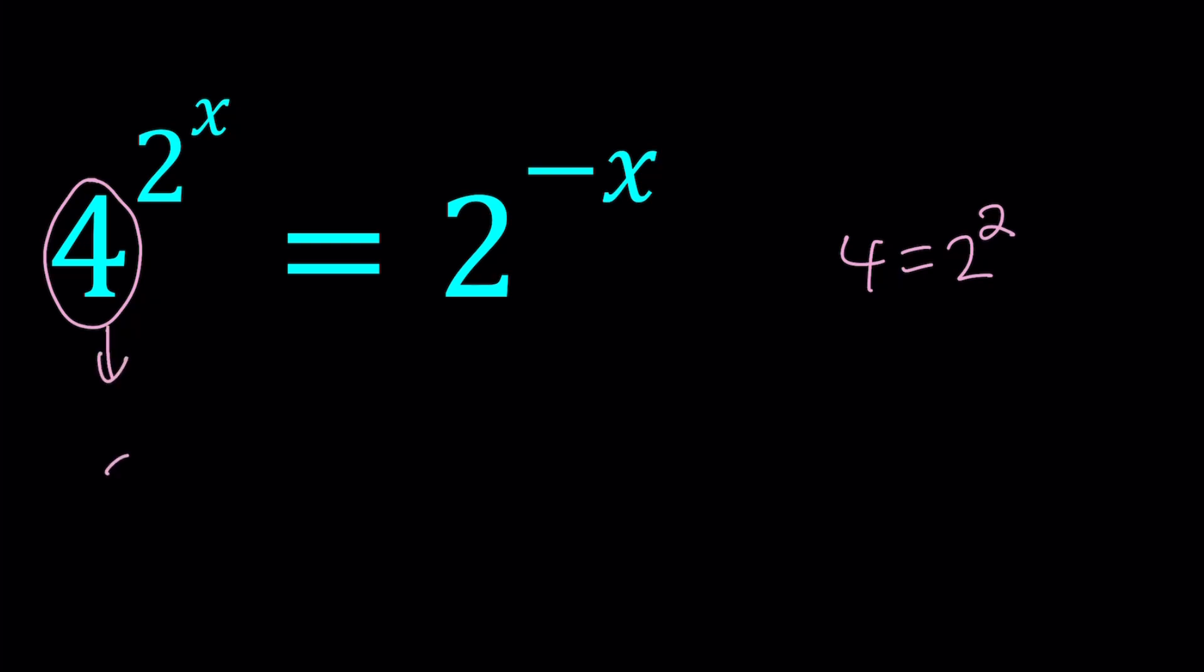Let's go ahead and replace the 4 with 2 to the second power, and then raise it to the power 2 to the power x, another power of 2 by the way, and that equals 2 to the power negative x.